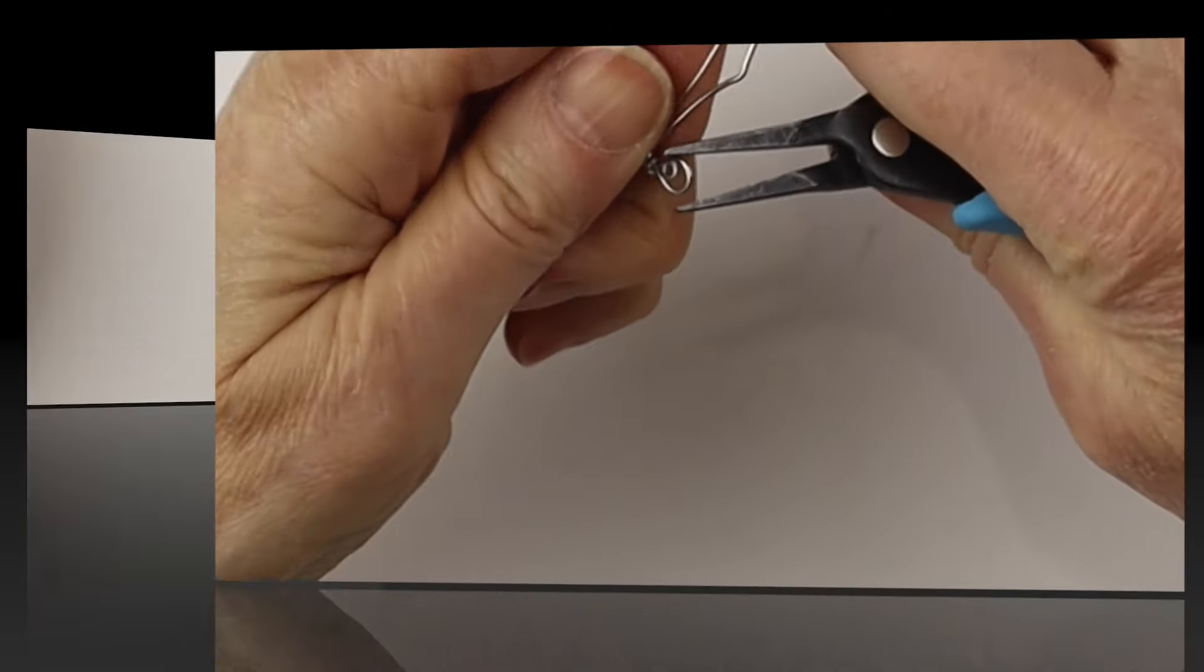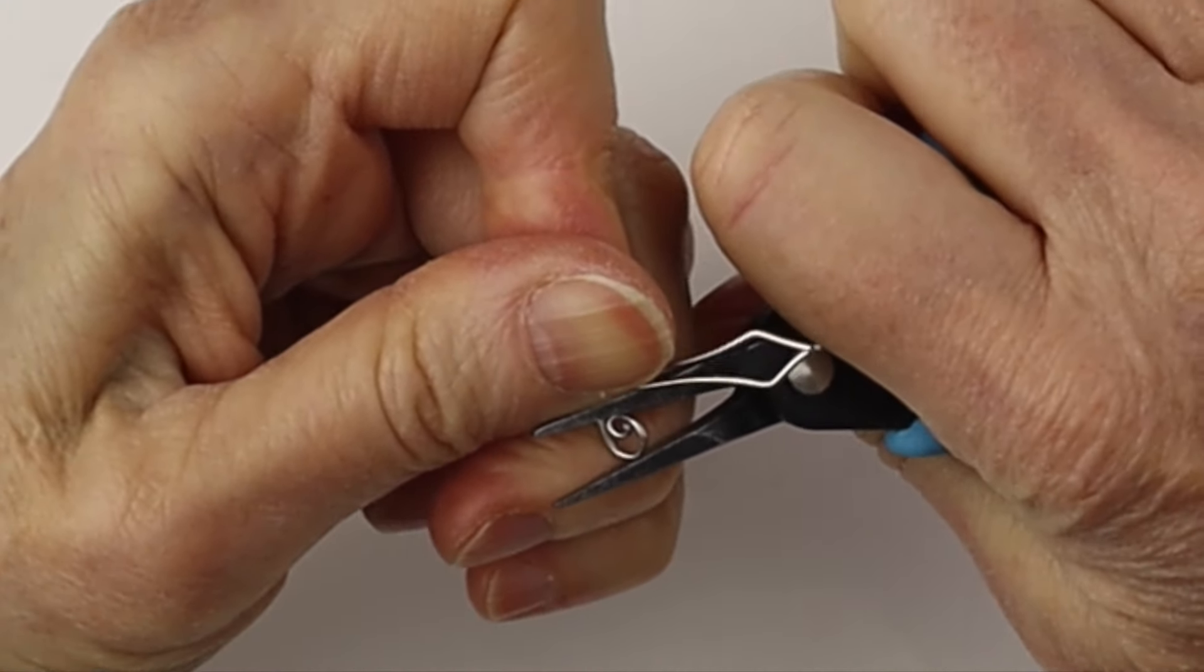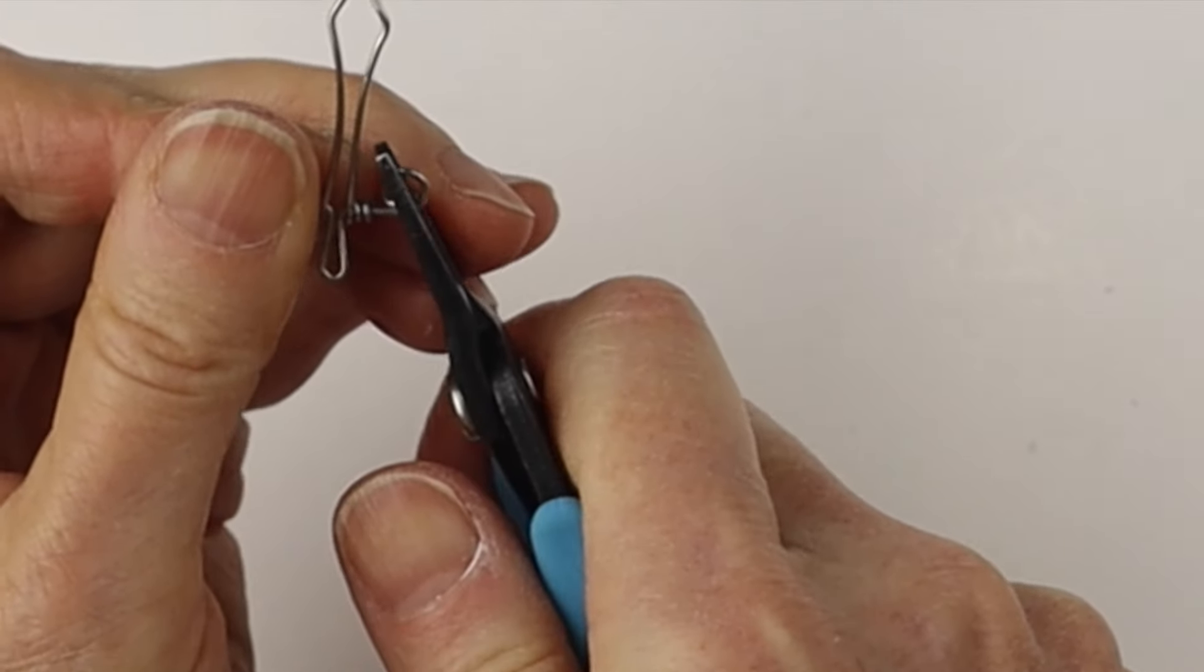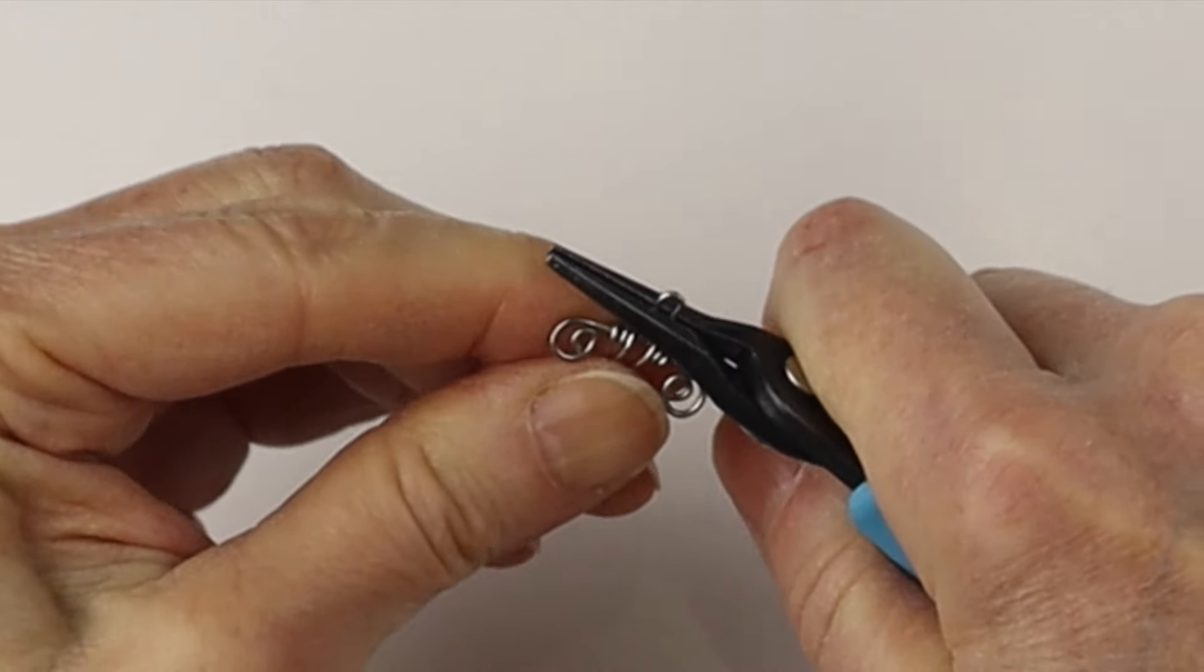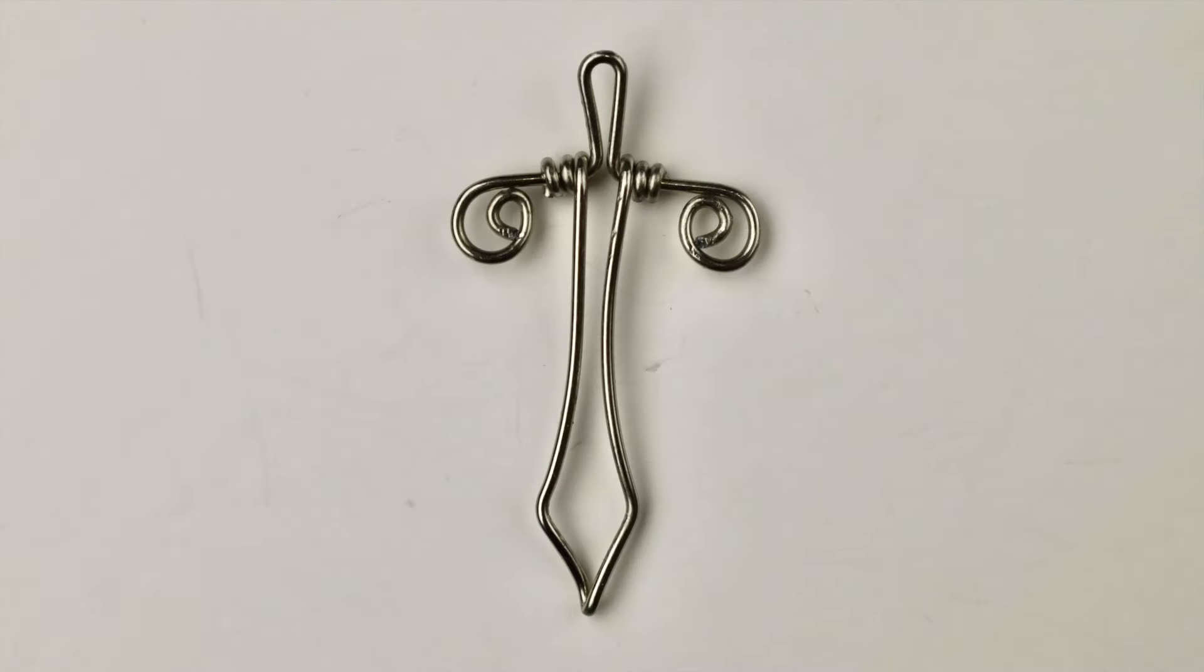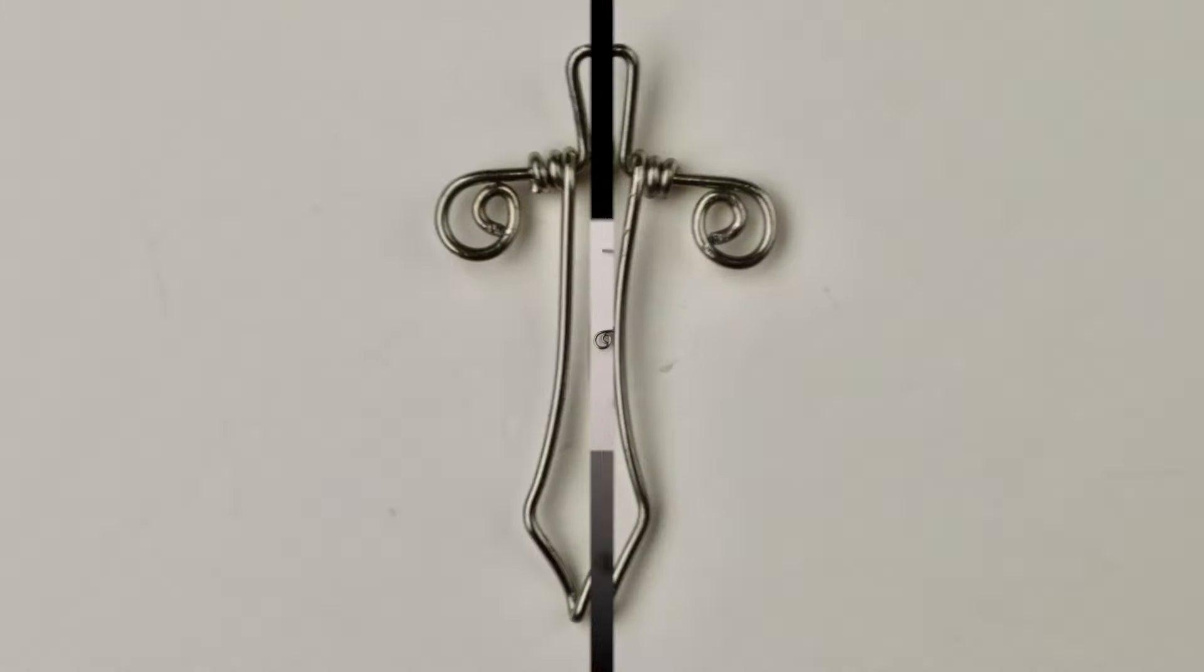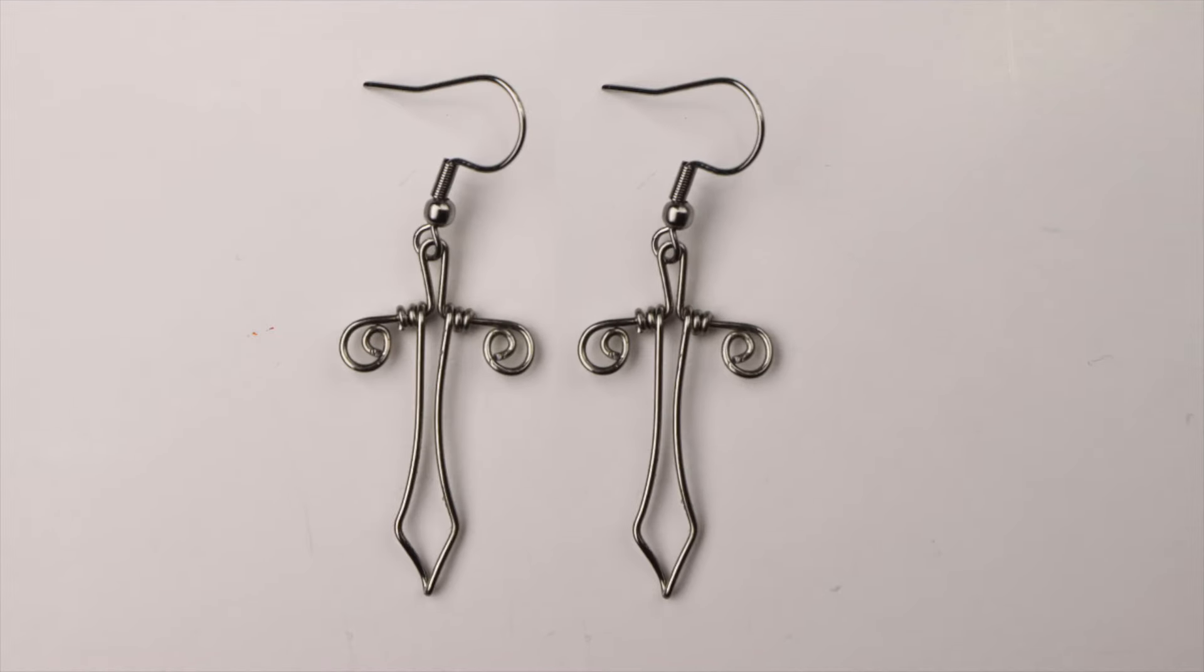And adjust those little spirals in a little bit, make any other adjustments. So there you have the sword and you can put some earring hooks on them if you like.